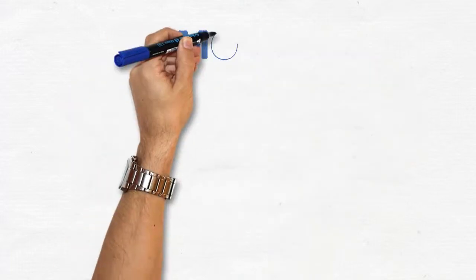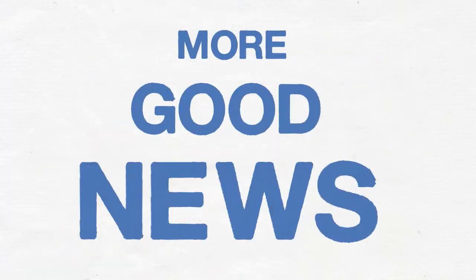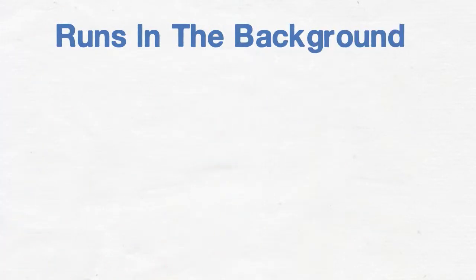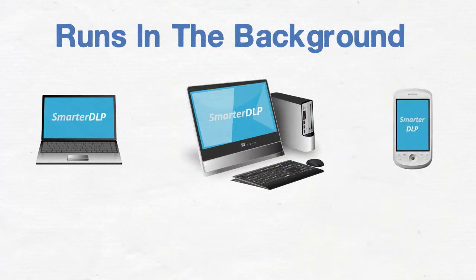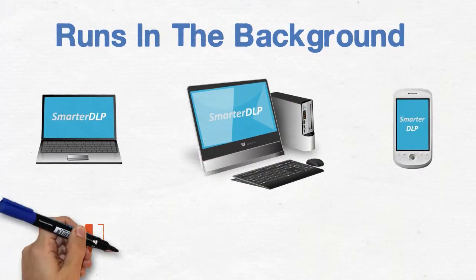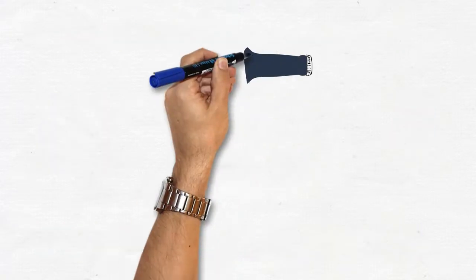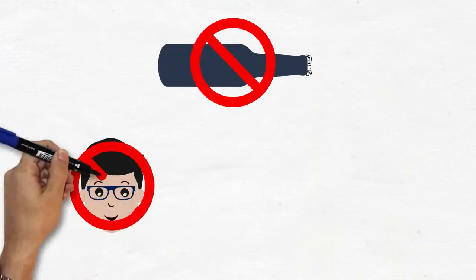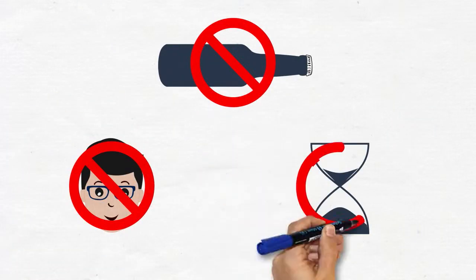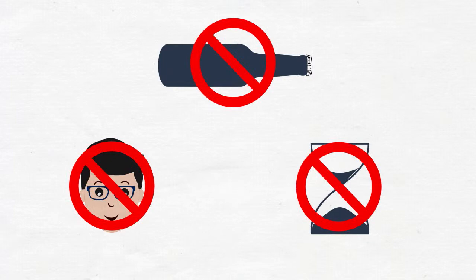And wait for it! There's even more good news. The Smarter DLP service runs in the background on your laptops, desktops, and mobile devices, which means protection is in full force at all times without any kind of burden on your team. No bottlenecks waiting for IT officer intervention, and no time lost due to clunky file permissions management or bulky hardware hogging applications.